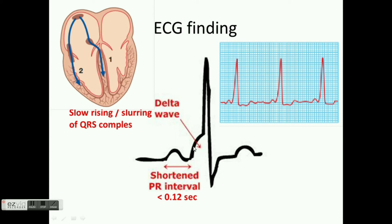Meanwhile, the impulse via the AV node reaches late, but it spreads early, as conduction via the AV node is through Purkinje fibers, which are fast conducting. So the findings are a shortened PR interval and delta wave.